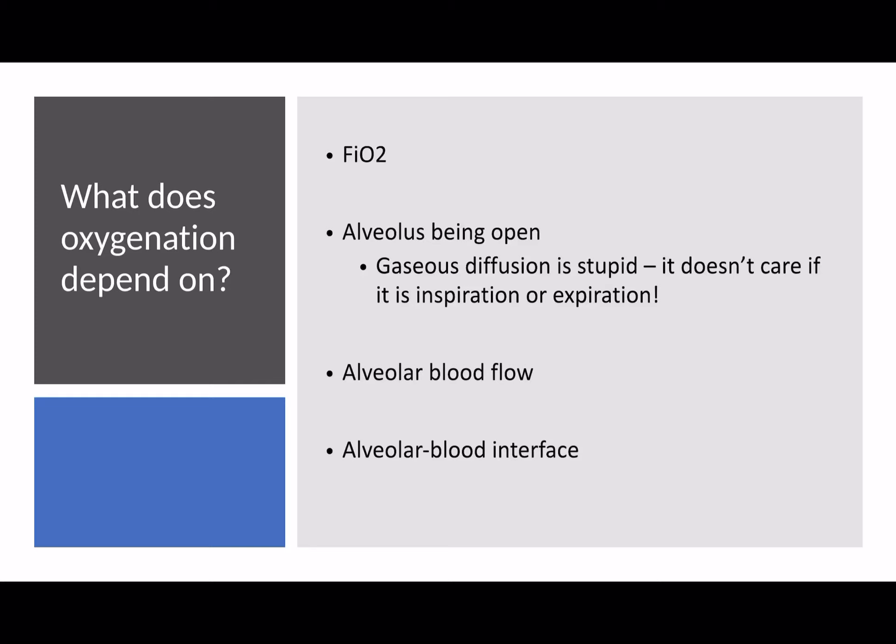Always think about optimising cardiac output and right ventricular function — there's no good having fantastic ventilation strategies if you haven't optimised the cardiovascular system. We'll talk about that in more detail when considering the different phenotypes of COVID-19 pathophysiology. The final factor is the alveolar-blood interface. In most patients with things like pneumonia, this is the thing that's really affected. You get lots of pus, oedema of the alveolar wall and vascular endothelium, which increases the diffusion distance for oxygen and causes alveoli to fill with pus so they can't take part in oxygenation.